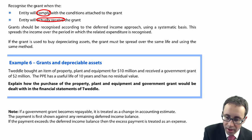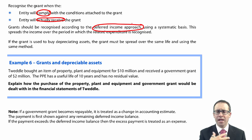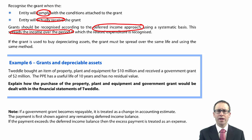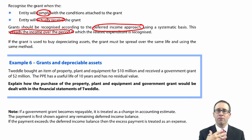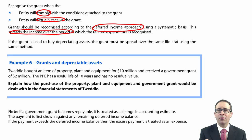If it is a revenue grant, then you need to comply with the conditions of the revenue grant, which might be a condition that you need to employ a particular number of employees within your business. And once you have done that, you will then receive money towards employing those employees. So it's all about compliance with the conditions attached to the grant, and there has to be virtual certainty about the fact that you are going to receive that cash.